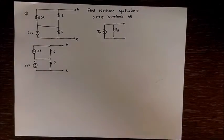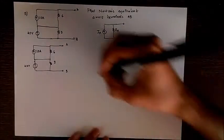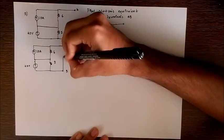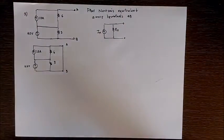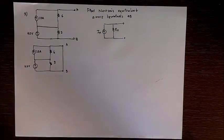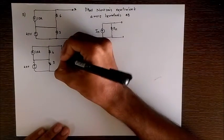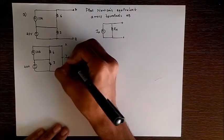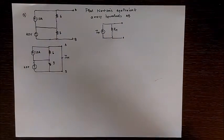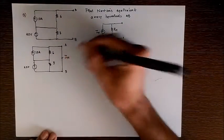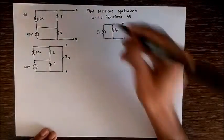So to find Norton's equivalent, the first thing we do is just join these terminals and the Norton current In is simply the current passing through this branch. So we have to find this In which is the value of our final current source.